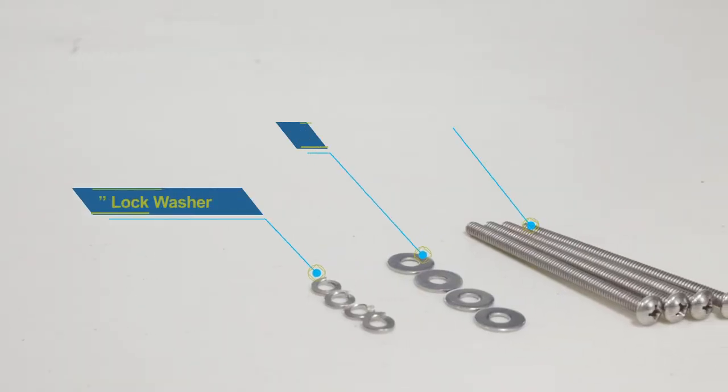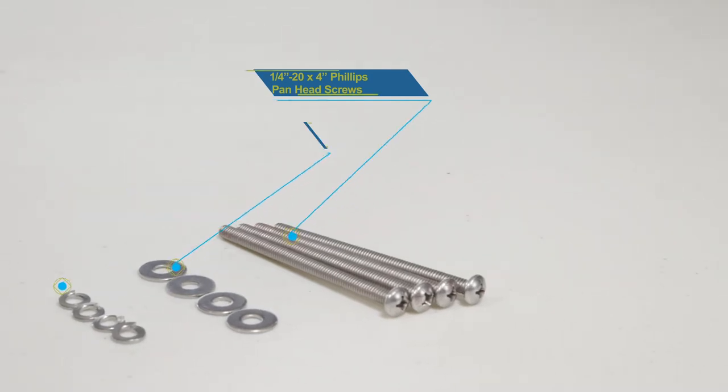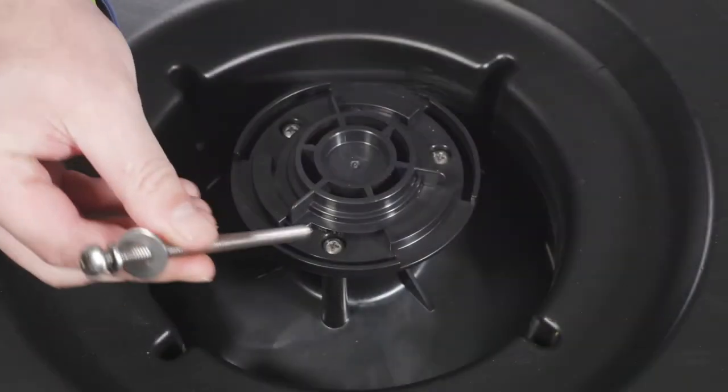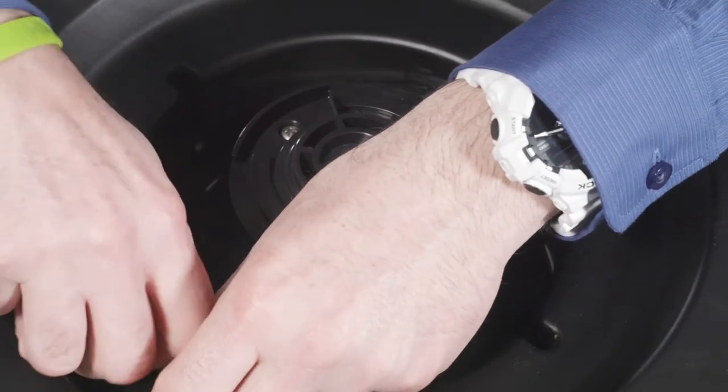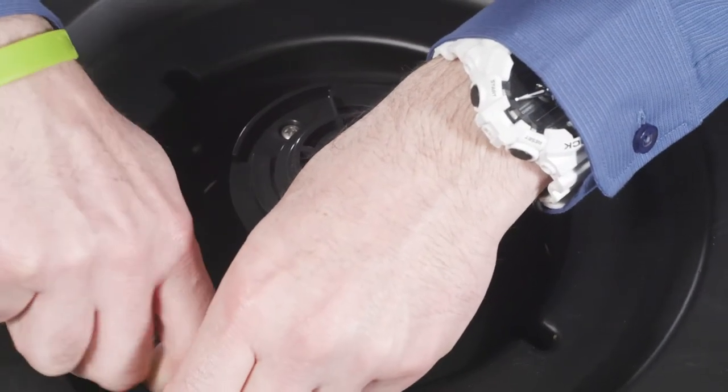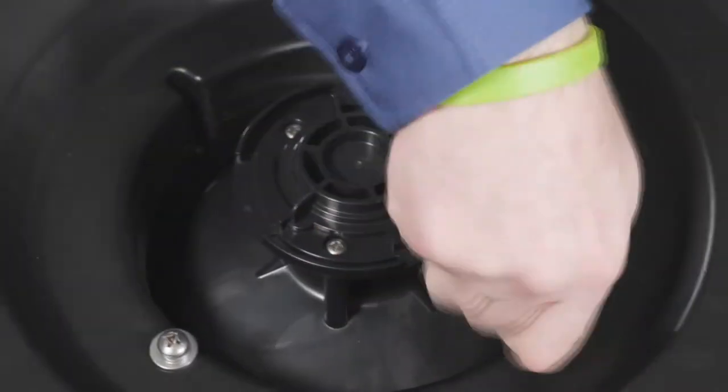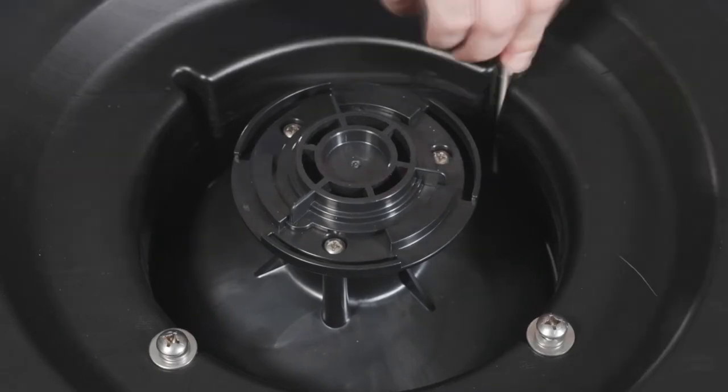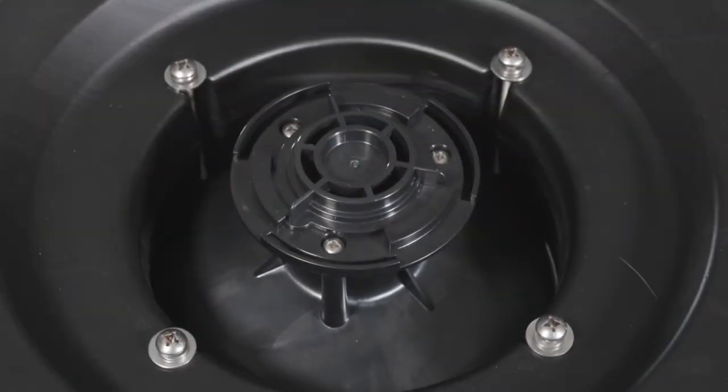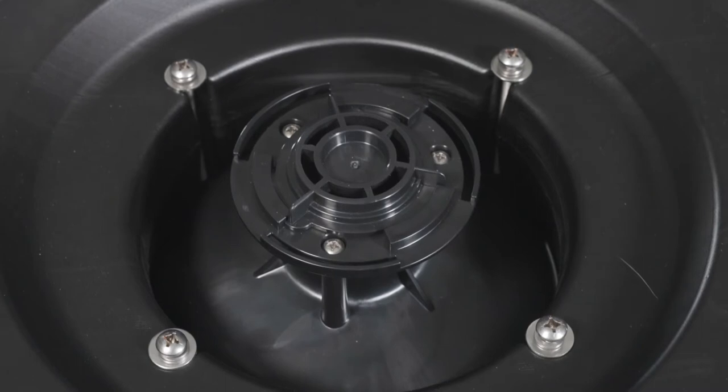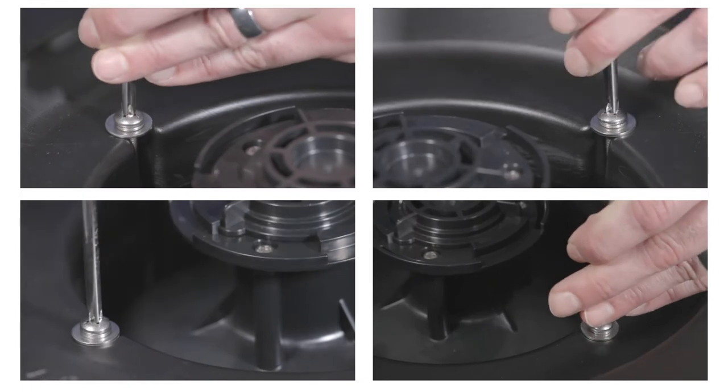Once the float is properly aligned, take your panhead screws, four washers, and four lock washers and place them through the float into the already tapped fountain top. Twist a few times with your hand to make sure they are threaded properly, then secure with your #2 Phillips head screwdriver until fully tightened.